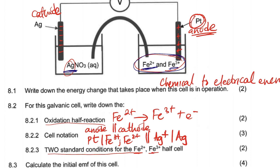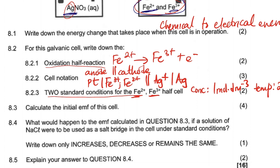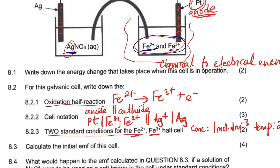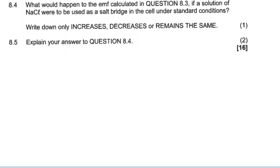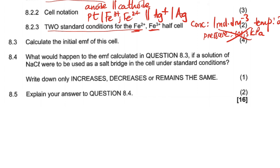Under standard conditions, the Fe²⁺ is in an aqueous state. The concentration will be 1 mol·dm⁻³ and the temperature is 25°C. There is no gas involved, so pressure of 101.3 kPa is not applicable here. Now let's go to question 8.3: calculate the initial EMF of the cell.